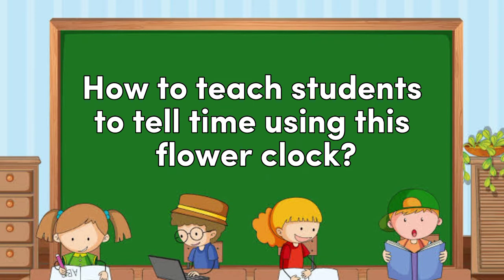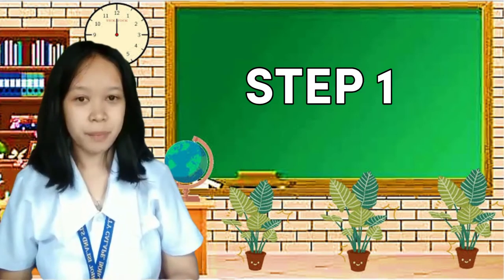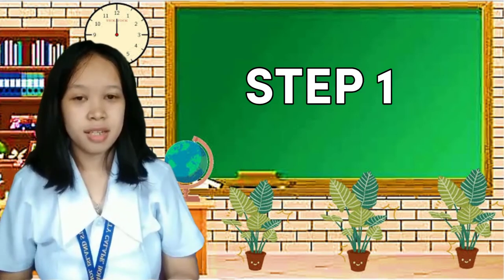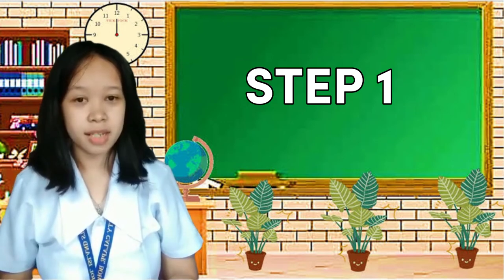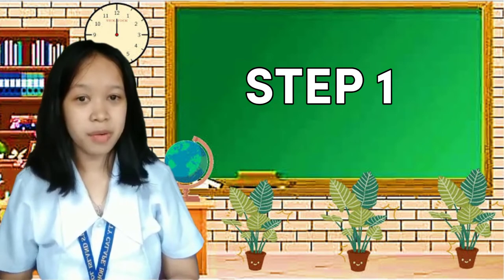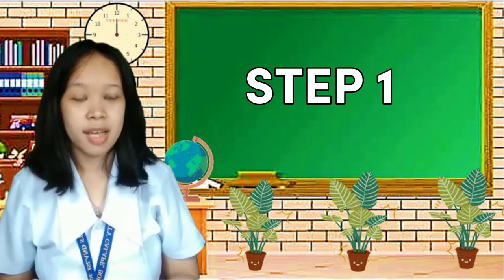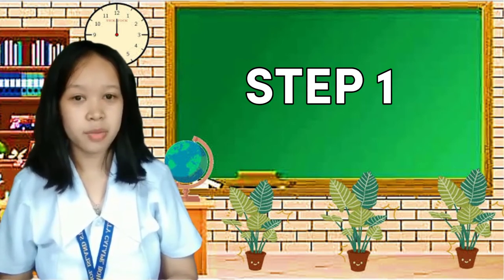How do we teach students to tell time using this flower clock? Step 1: Identify the clock's components. The ability to recognize the elements of the clock is the first step in learning to tell time. This includes the numbers, the hour hand, and the minute hand. Explain the parts to your students and let them practice pointing out which part is which.